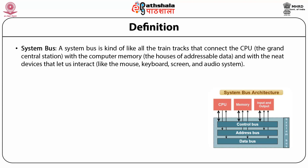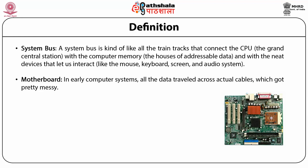The system bus connects the CPU — the grand central station — with computer memory and devices like the mouse, keyboard, screen, and audio systems. In early computer systems, data traveled across actual cables, which got messy. Nowadays, most wires are gold-plated traces on the computer's motherboard — a large flat surface that all electronic components are mounted to. The most critical connection of any computer system is the system bus.